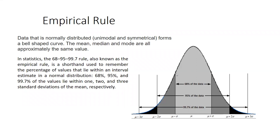Before starting this, I want to explain what we mean by standard deviation. You can see this is the normal standard bell-shaped curve. At the center point — where mu is written — mean equals mode, mean equals median, and median equals mode. All three are equal to each other at this point.